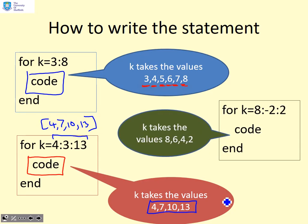Here's another alternative. For k equals eight colon minus two colon two. You can see that this expression is equivalent to eight, six, four, two. So now the values of k are counting down rather than counting up.